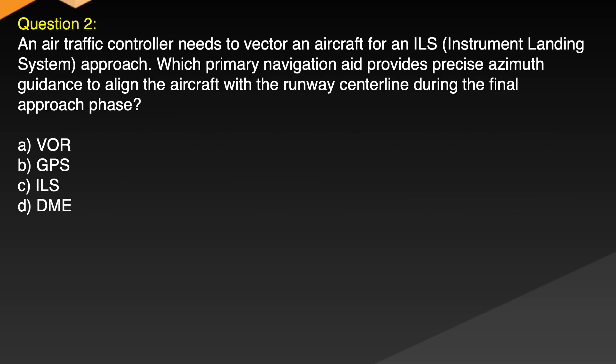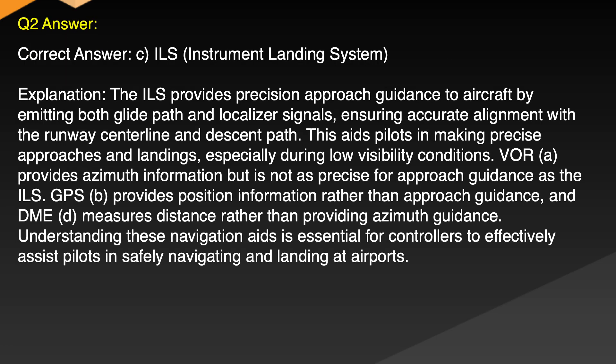Question 2. An air traffic controller needs to vector an aircraft for an ILS instrument landing system approach. Which primary navigation aid provides precise azimuth guidance to align the aircraft with the runway centerline during the final approach phase? A. VOR, B. GPS, C. ILS, D. DME. Correct answer: C. ILS, Instrument Landing System.